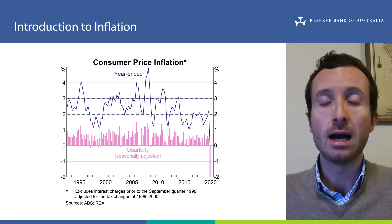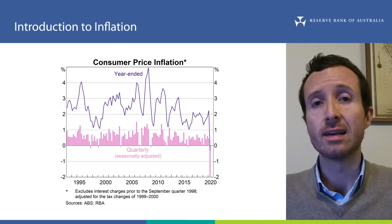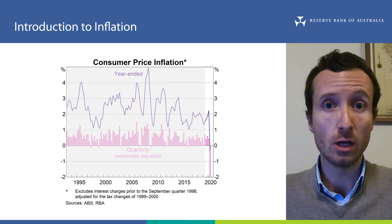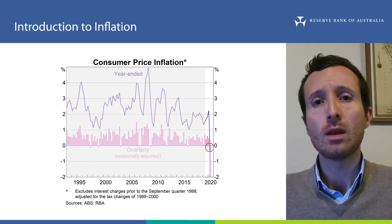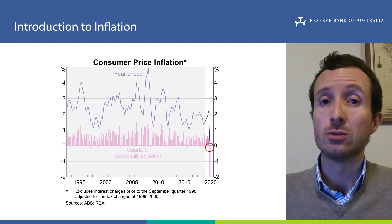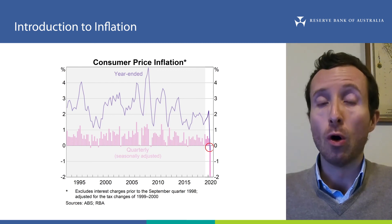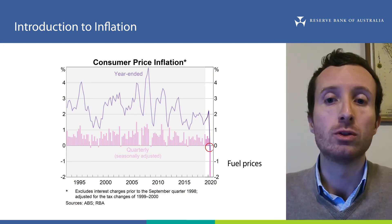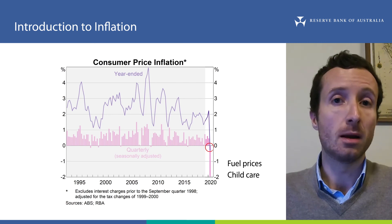Inflation has been at times above the RBA's target range and at times below, which illustrates the flexibility of the target. More recently, in the second quarter of 2020, you can see the largest quarterly decline in CPI inflation for the period shown in the chart, which caused annual inflation — the line — to become negative. CPI inflation aggregates price changes of many goods and services, and some of these were impacted directly or indirectly by the COVID-19 pandemic. For example, falling global oil prices reduced fuel prices in Australia during the quarter, and government policies aimed at reducing the cost of childcare caused a large decline in the price of the childcare item included in the CPI basket.